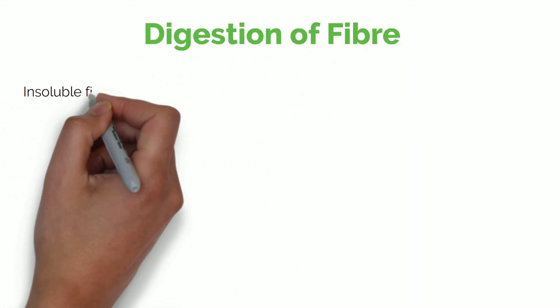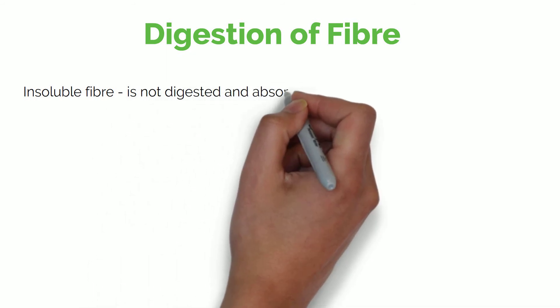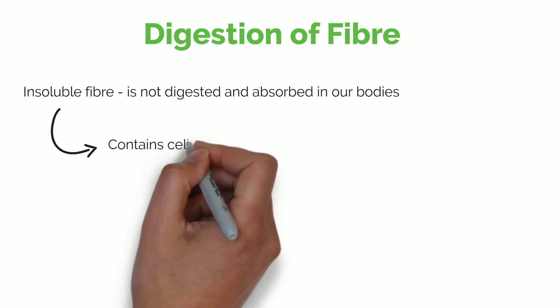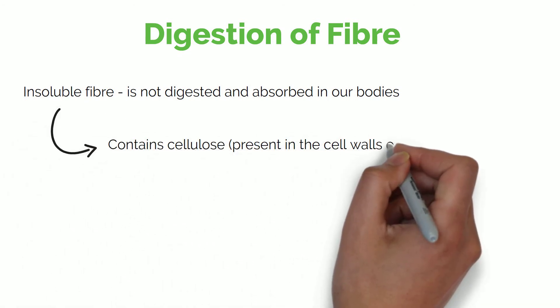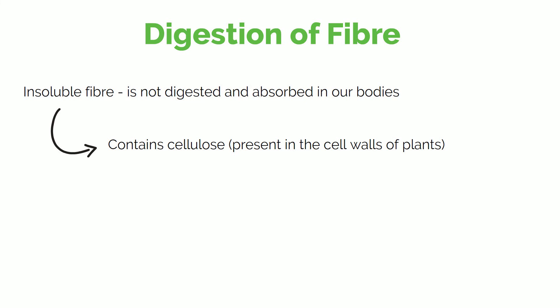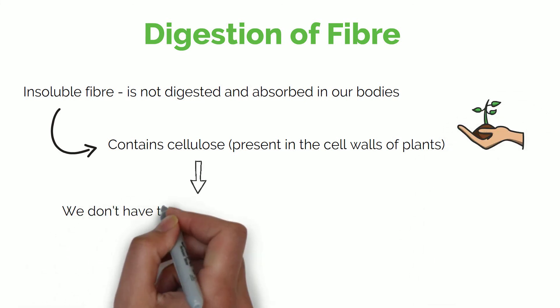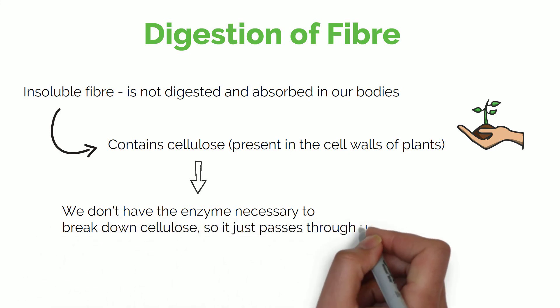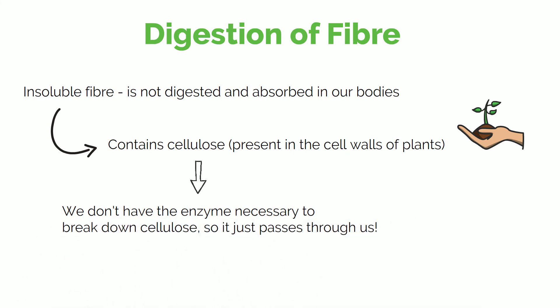When it comes to fibre, there is a type that is not digested or absorbed in our bodies — insoluble fibre. This is because it contains cellulose, present in the cell walls of plants. Cellulose cannot be broken down in our bodies as we lack the enzyme required to do so. Therefore, when we ingest insoluble fibre, it simply passes through us without digestion or absorption — and it also helps with bowel movements.